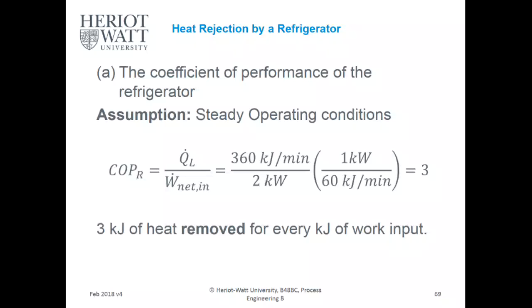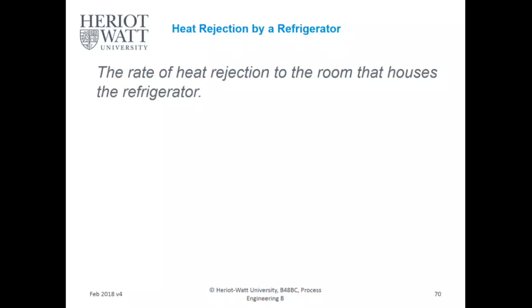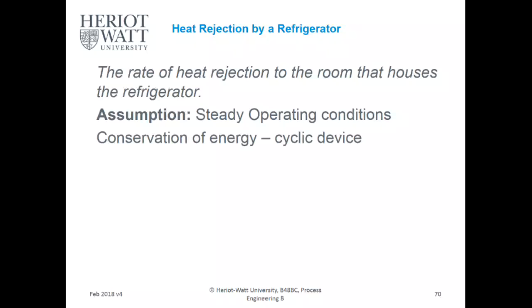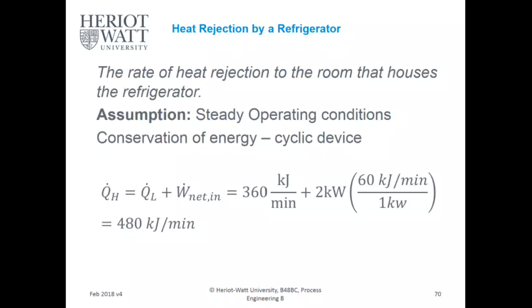This is not because you're producing heat — you're just moving it around. For the rate of heat rejection to the room housing the refrigerator, using conservation of energy in a cyclic device: QH equals QL plus the work input. So you're producing 480 kilojoules per minute. The heat removed from inside the fridge plus the work input are both dissipated into the room as heat.